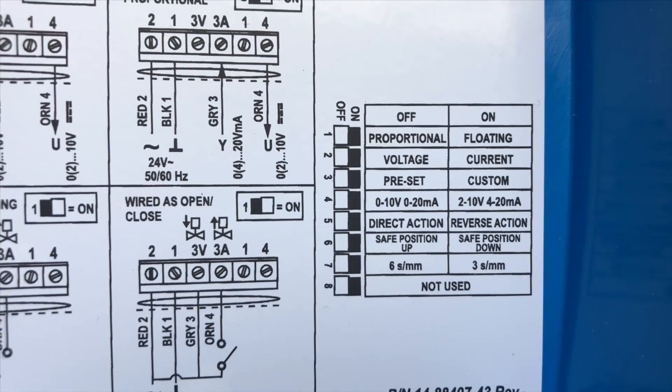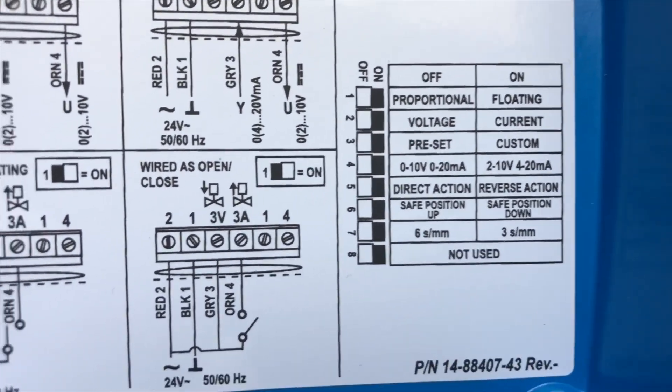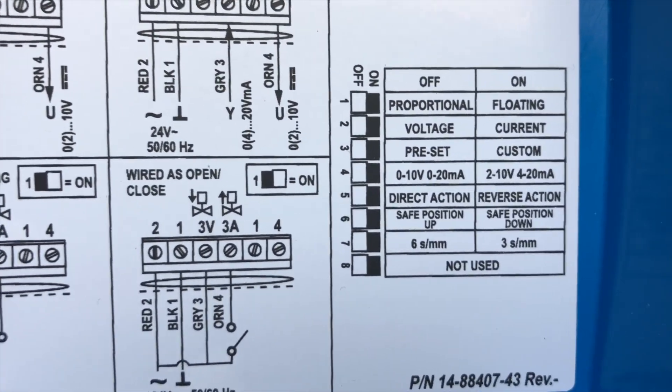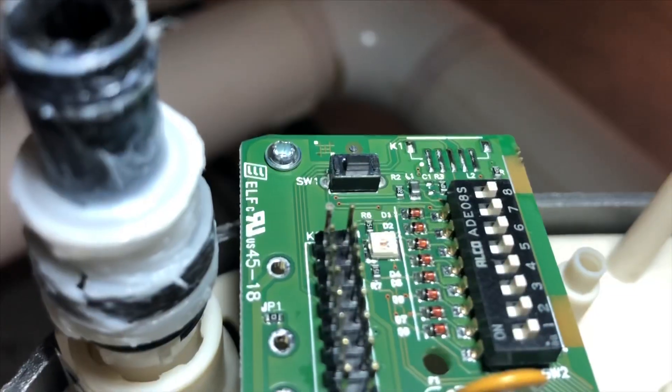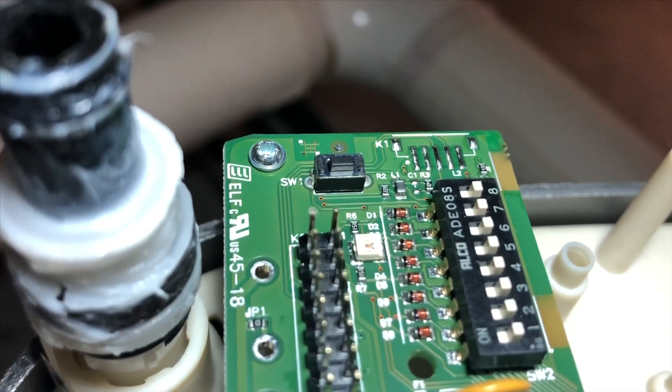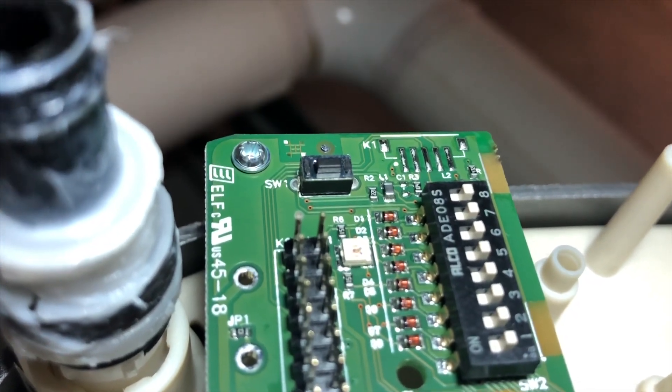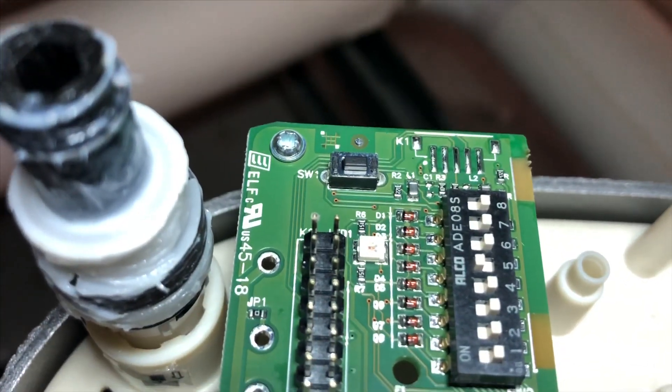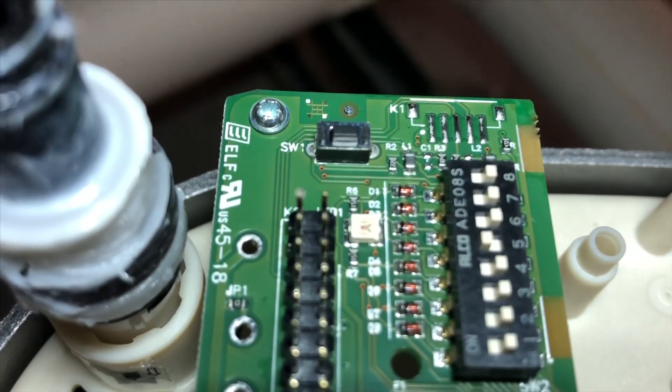So we're going to go to reverse action on, which would be number 5, dip switch number 5. We're going to switch that. We've turned our power off to our controller. And we're going to switch dip switch number 5 to on. Now we've put it to the on position, dip switch number 5, which will be reverse action.